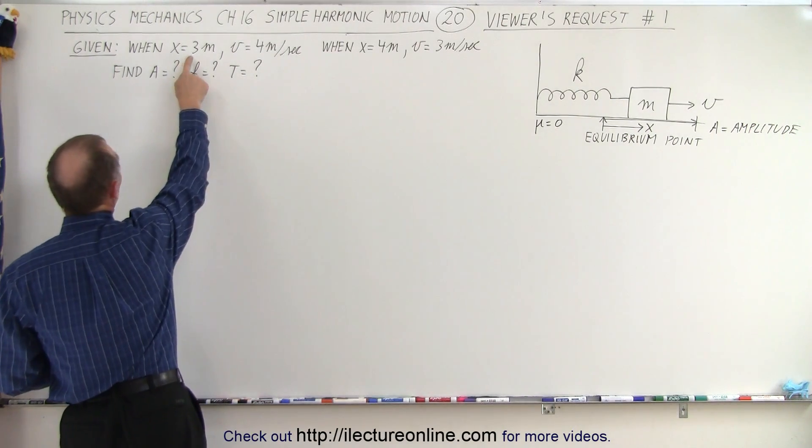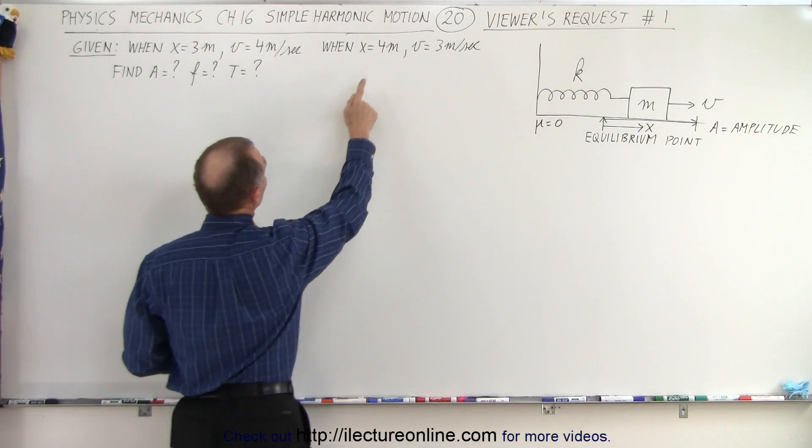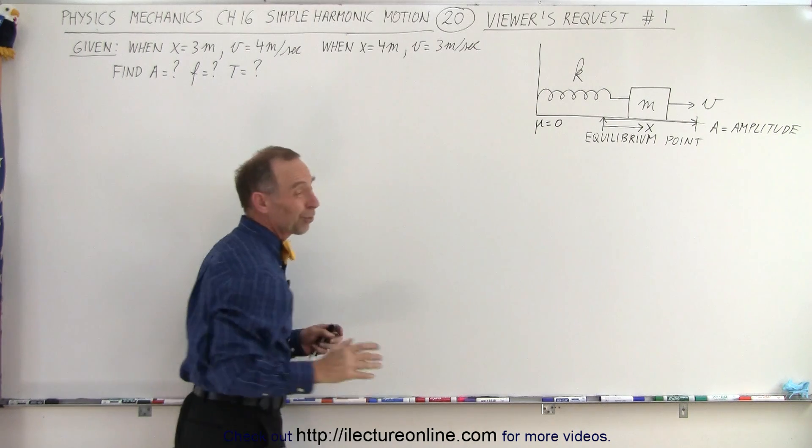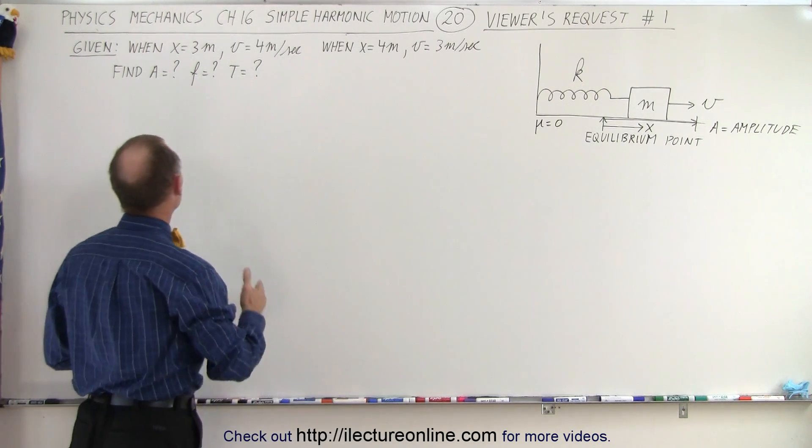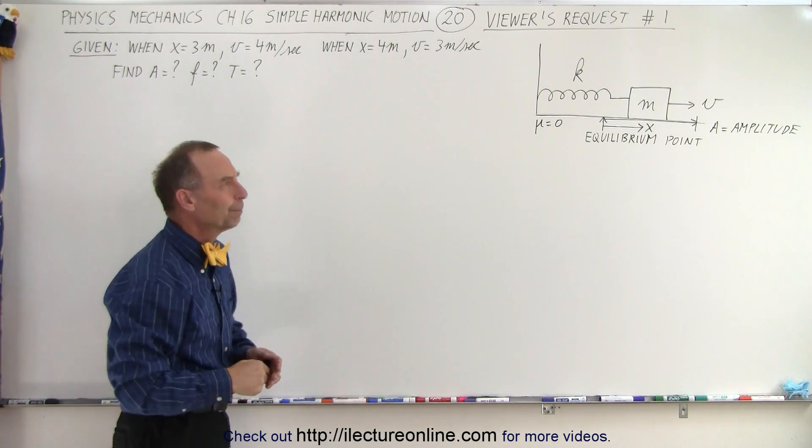They also give us the following information. They tell us that when x equals three meters, v equals four meters per second, and when x equals four meters, v equals three meters per second. And they want us to figure out the amplitude, the frequency, the period, and so forth. So how do we do that?